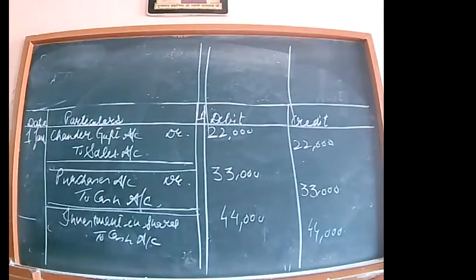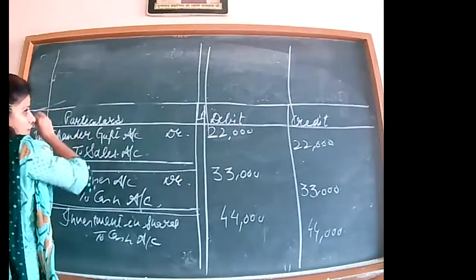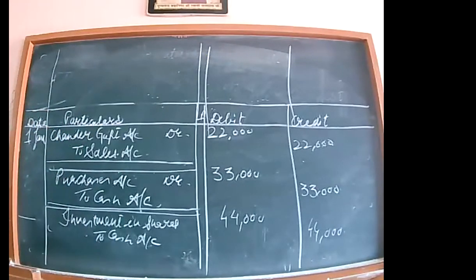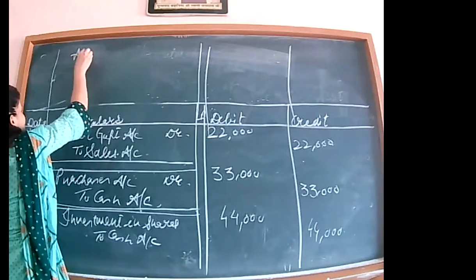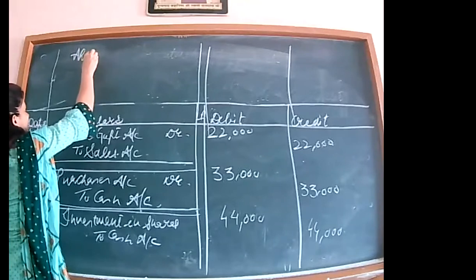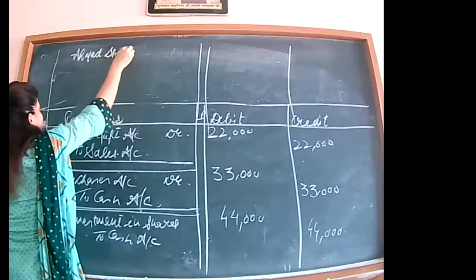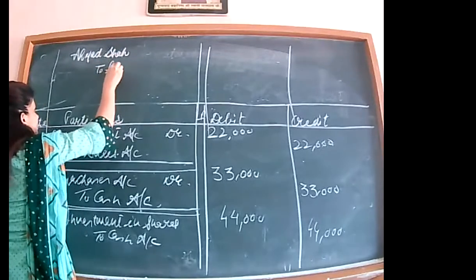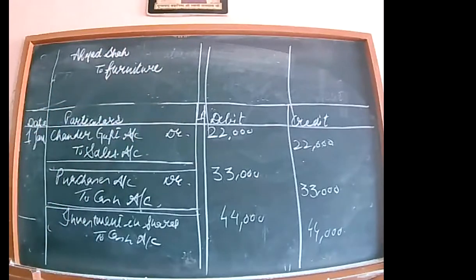Sold furniture to Ehmad Shah for cash. Ehmad Shah is the person's name — but the transaction is in cash, so Ehmad Shah's name will not appear. Entry: cash account debited to furniture account — Rs. 55,000.